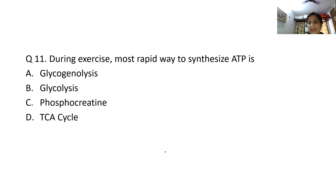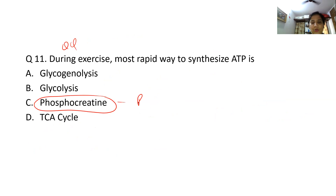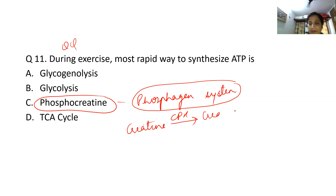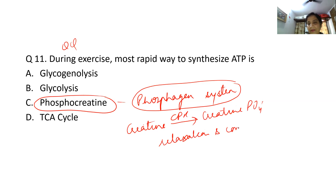During exercise, the most rapid way to synthesize ATP is phosphocreatine — also known as the phosphagen system. Creatine is the energy reservoir of muscle. In the presence of creatine phosphokinase (CPK), creatine forms creatine phosphate, which provides energy for muscle relaxation and contraction. During exercise, the phosphagen system is first, followed by glycogenolysis.